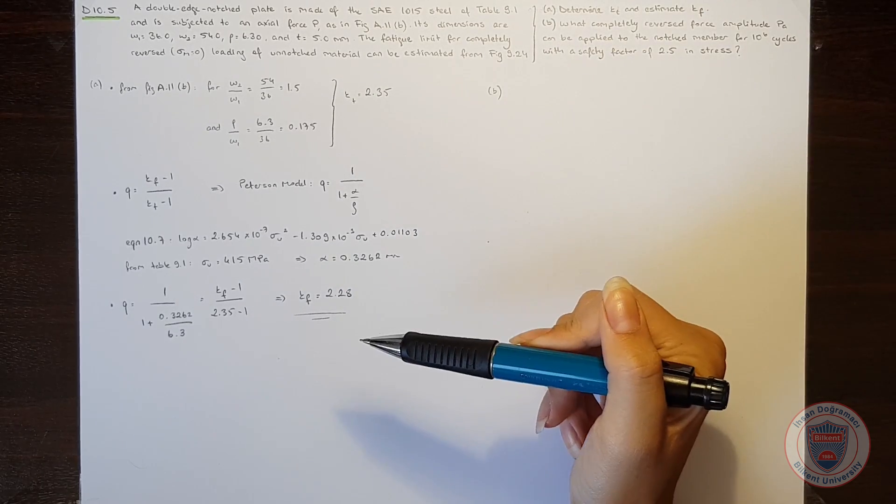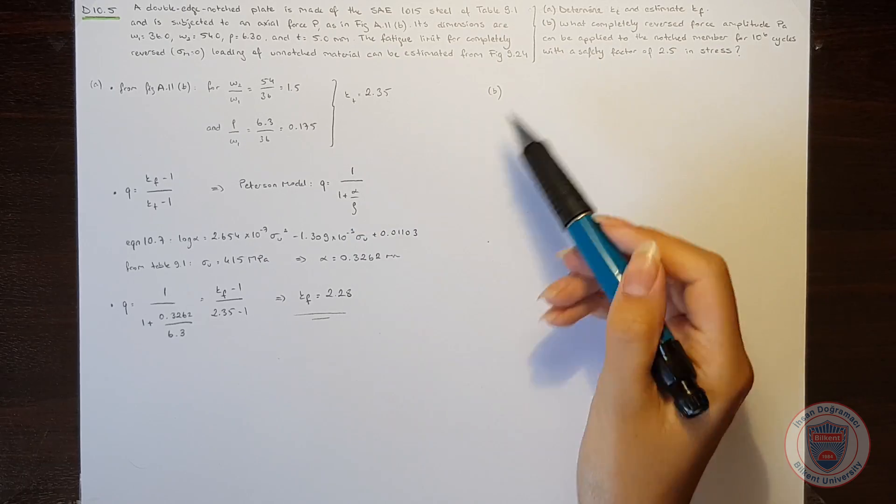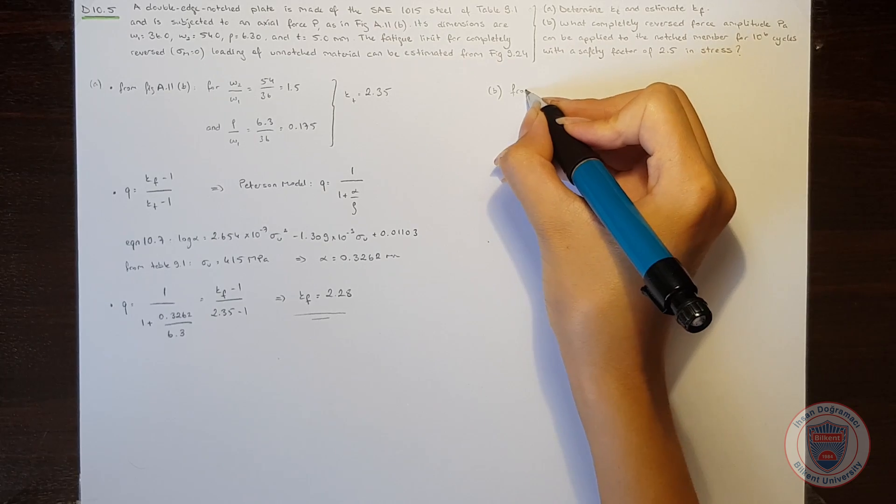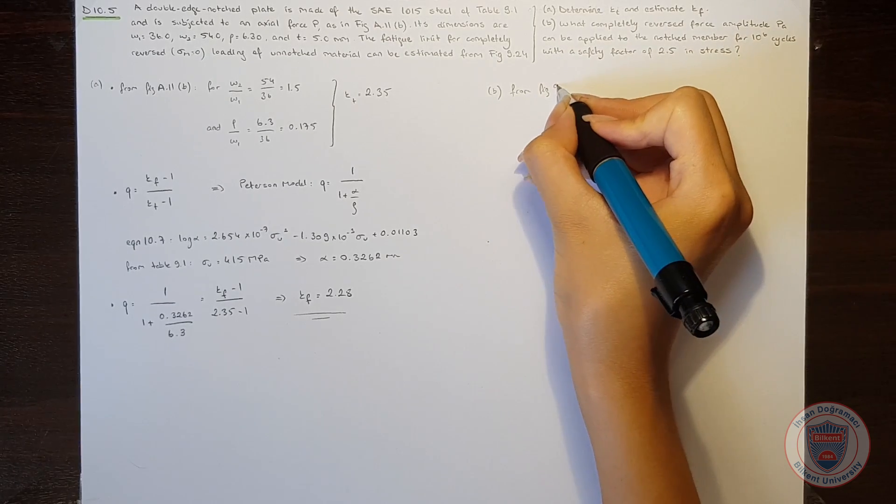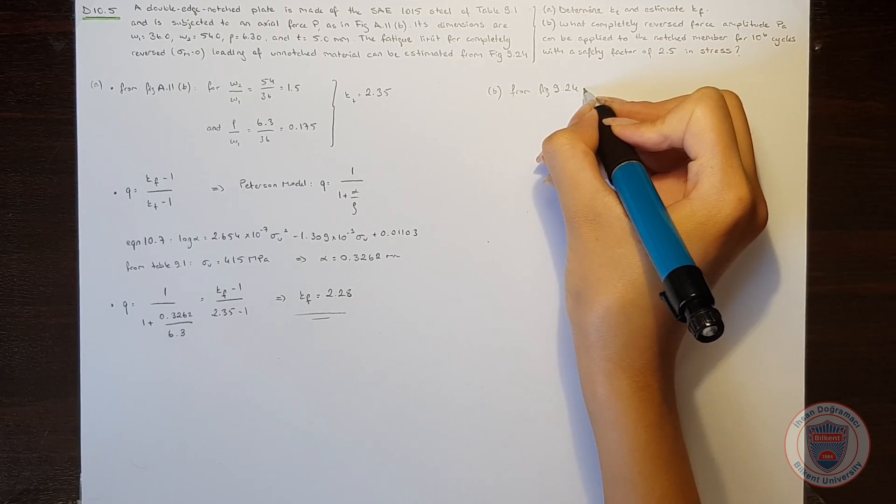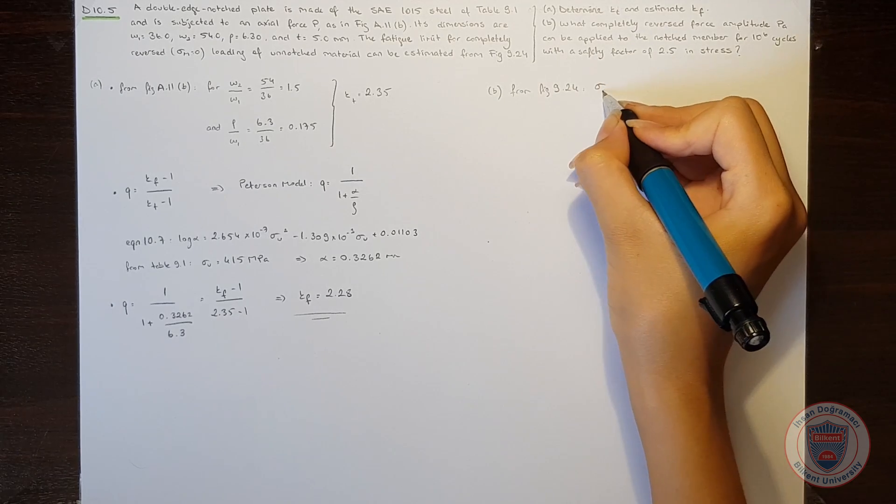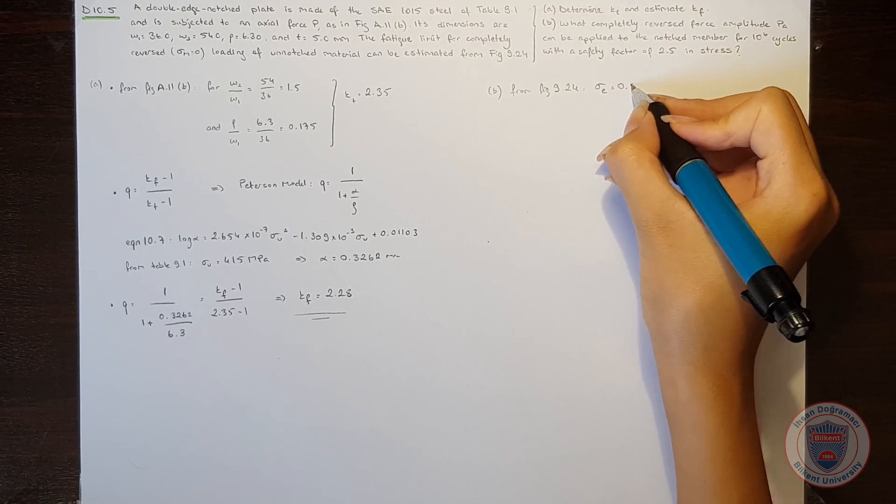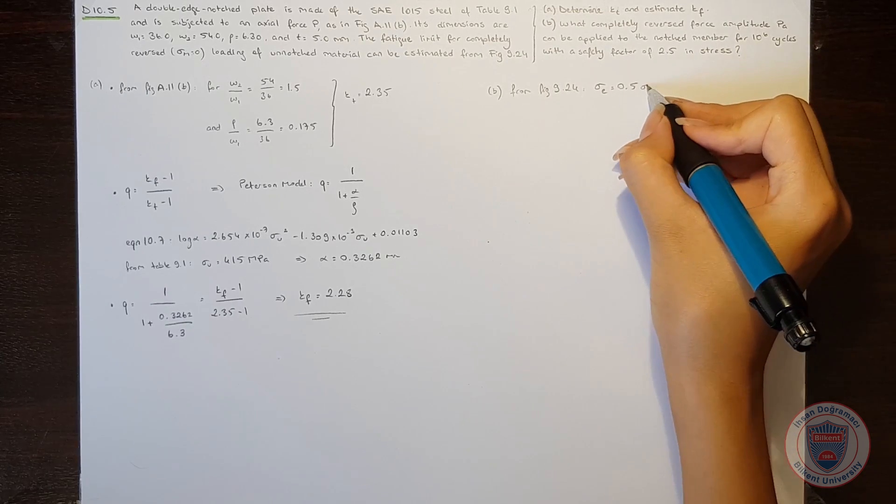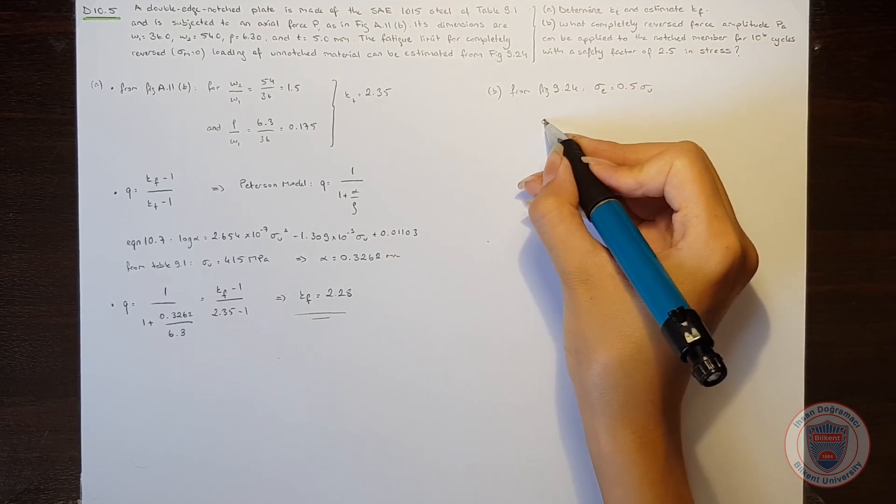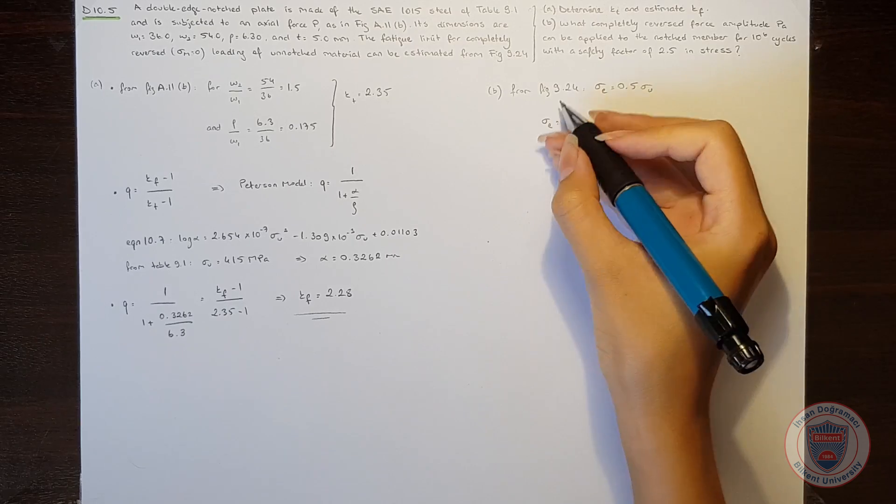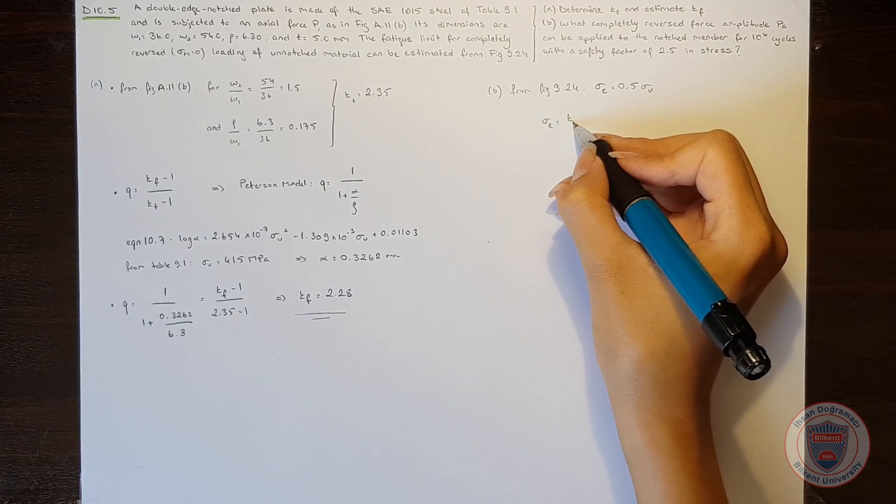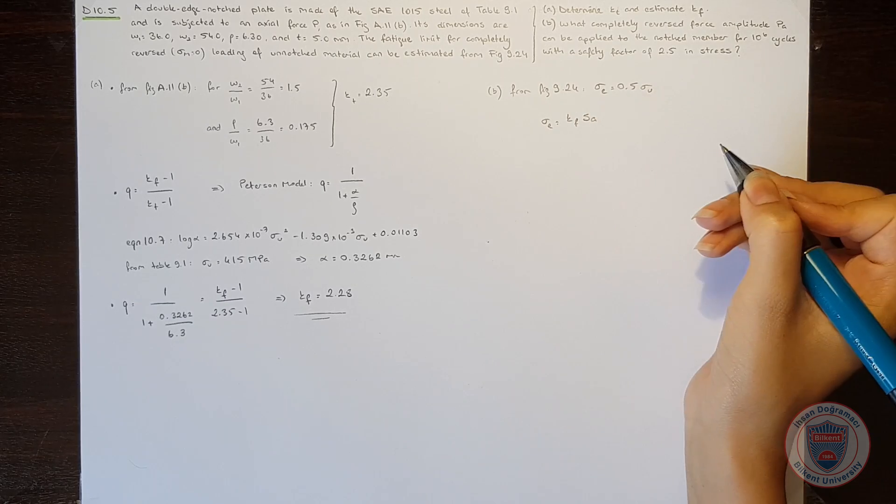In the question, it is suggested that the fatigue limit can be estimated from figure 9.4. So when we look at that figure, we see that sigma e will be equal to 0.5 times the ultimate strength.